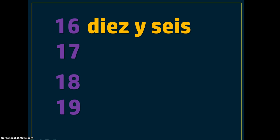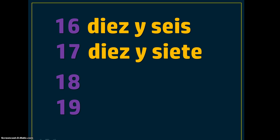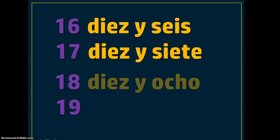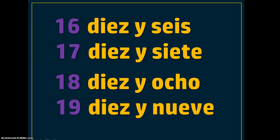Now you can see it's a combination from 16 on to 100 — it is a combination of the two numbers. Ten and six for 16, for example. Dieciséis, and you say it all together. You don't break it down. Dieciséis, diecisiete, dieciocho, diecinueve.